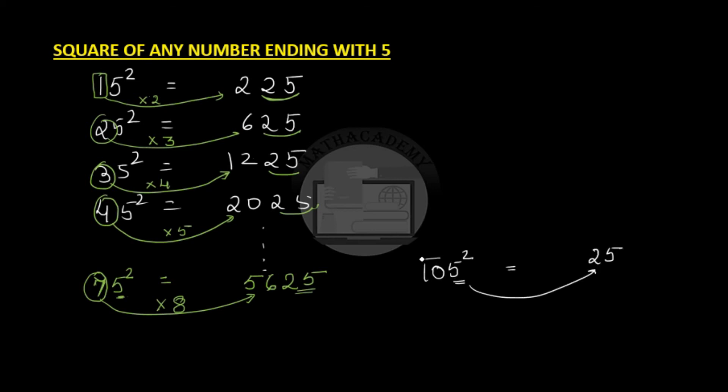Now, the number that is formed from the remaining digit is 10. So, what we will do? We will multiply 10 by a number which is 1 more than 10, which is 11. And 10 times 11 gives us 110. So, the square of 105 is 11025. So, you see how easy it is to square any number ending in 5.